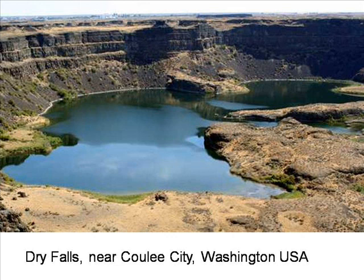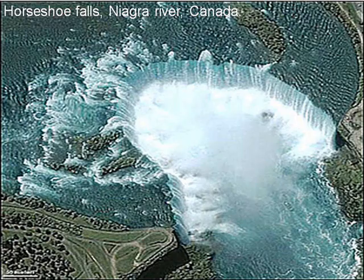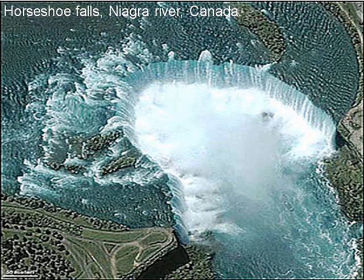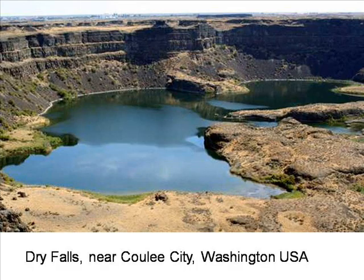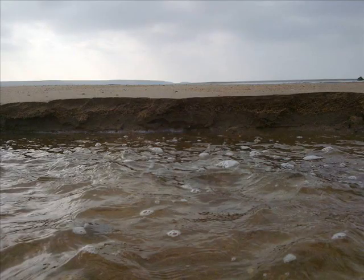For instance, these dry falls in Washington, USA have large plunge pools at their base. These can only have been produced by a very large torrent coming over the edge of the cliff. There is no flow of water over the cliff today, and therefore present-day conditions provide no mechanism for creating the plunge pools. Something completely different happened in the past to produce this feature, and not so long ago, because it is perfectly preserved.